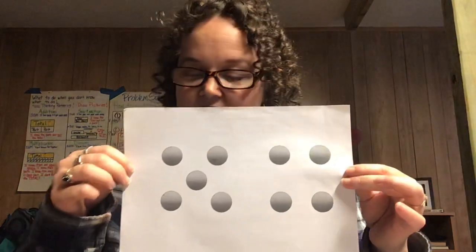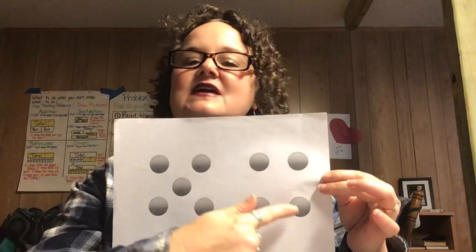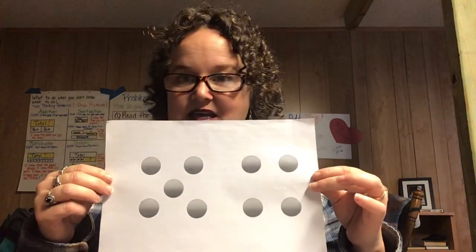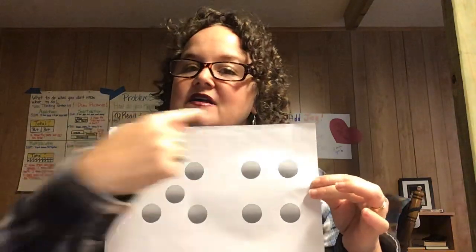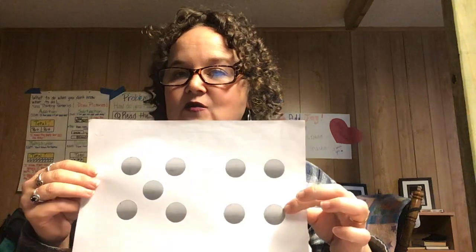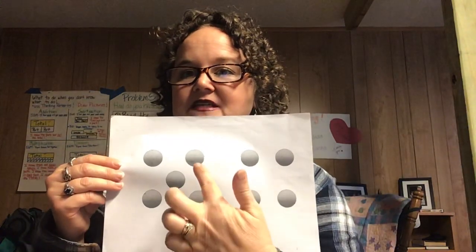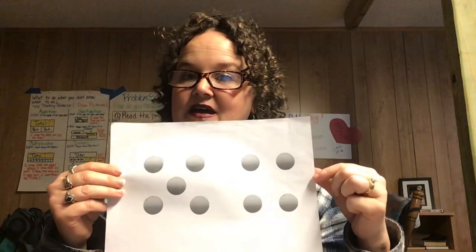So you might have seen that there was a four and a five without counting. What we're going to do today is put these two parts of the numbers together by counting on. When we count on, we say the first number and then we count on the second number. Before, you might have counted all: 1, 2, 3, 4, 5, 6, 7, 8, 9. When we're counting on, we say the 5 and count on from that: 5, 6, 7, 8, 9 — a much faster way of counting! I can also count on starting with the 4: 4, 5, 6, 7, 8, 9 — still ending at 9. It doesn't matter which number you start with.